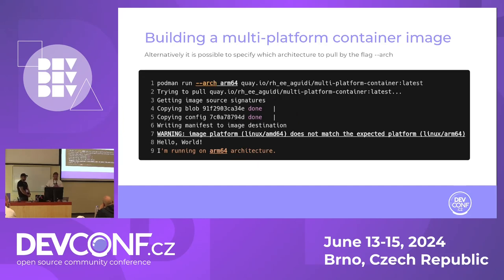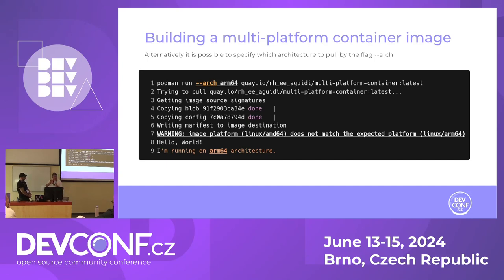This one's a bit different. We're actually telling Podman to try and coerce it to run on ARM64. It runs through, pulls down the image, and then there's a warning: 'Image platform does not match.' But then it goes and prints ARM64. So be aware that some tools like Skopeo or Podman — you'll think it's running on ARM64 architecture, but it's not. The big thing is line number seven telling you that it's not.